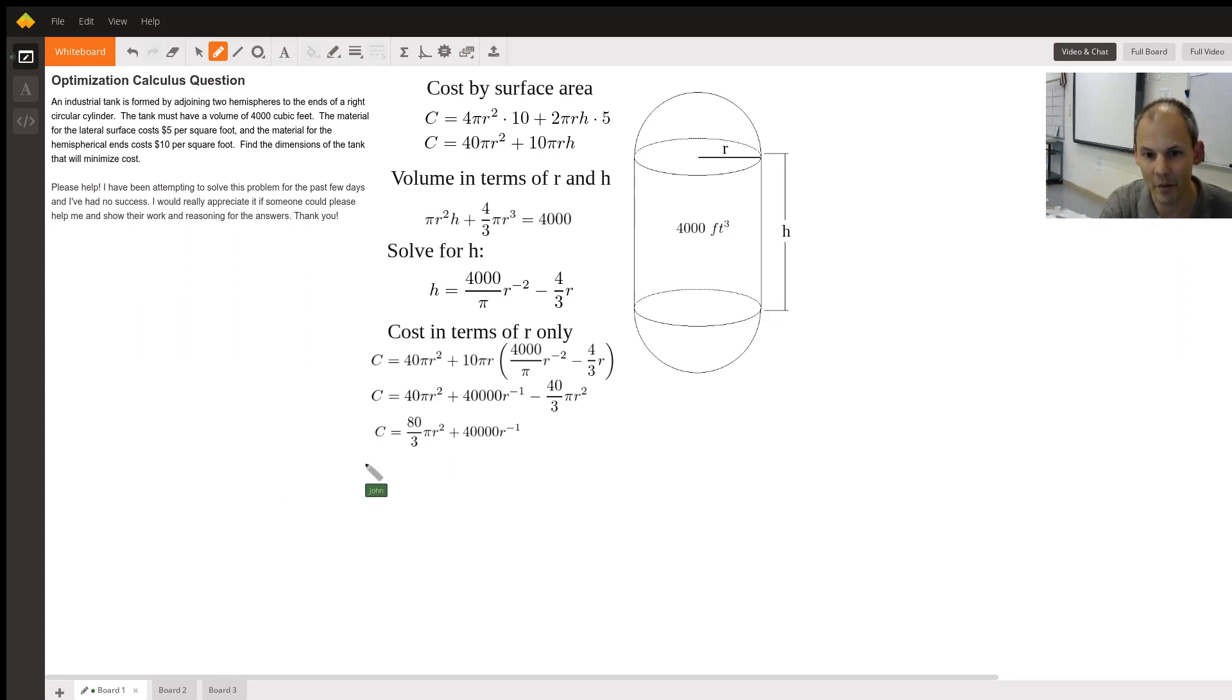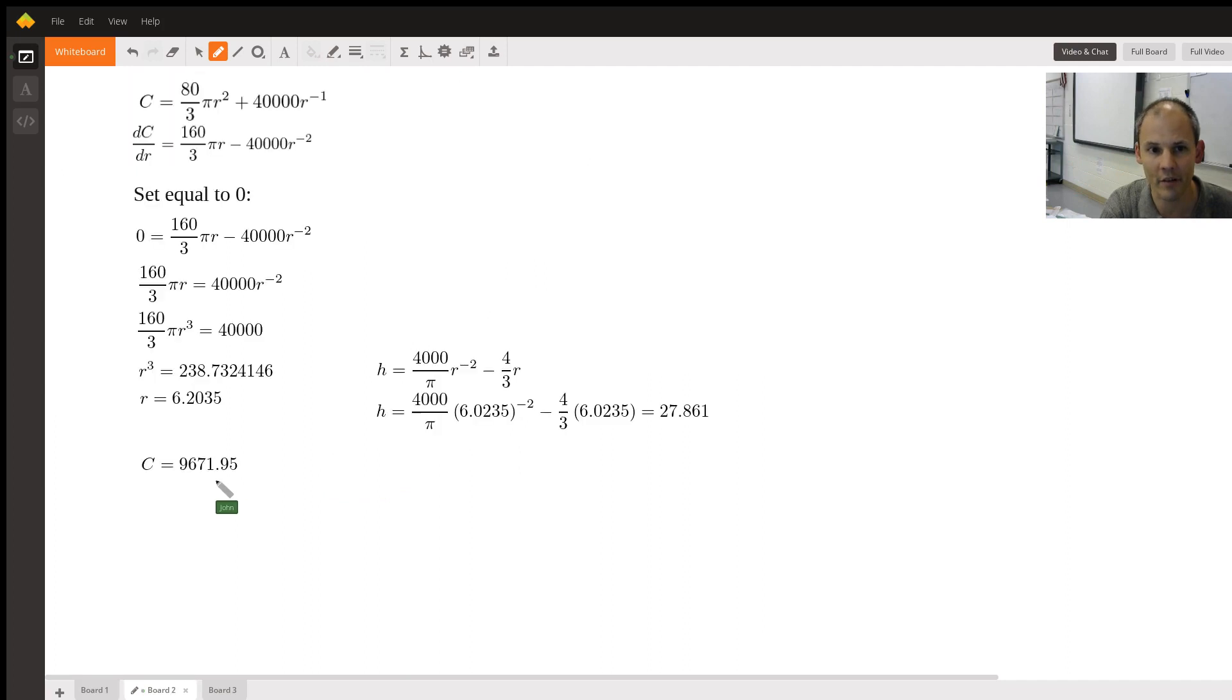So I'm going to go to my new board. I'm going to bring this function over here. I'm going to take you through every part of this. dC/dr, which is the derivative. I use the power rule, multiply by 2, I get 160/3. I get negative 1 times 40,000 is negative 40,000. And I decrease the exponent by 1. I'm going to set this equal to zero. I need to find out when this is zero. So I make this zero, and I begin to solve.